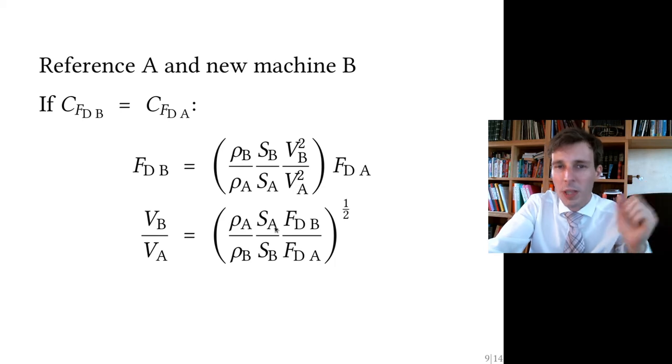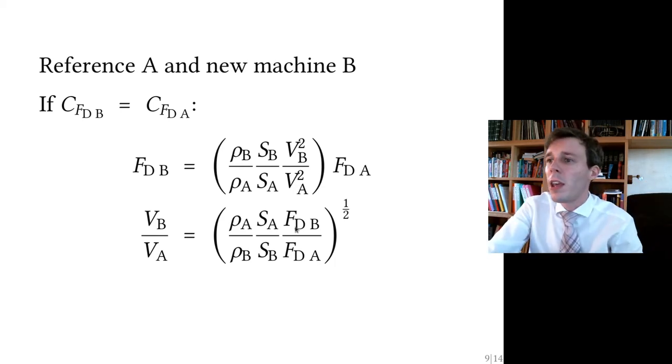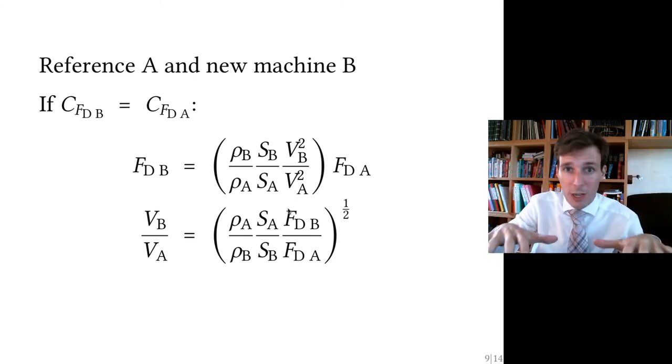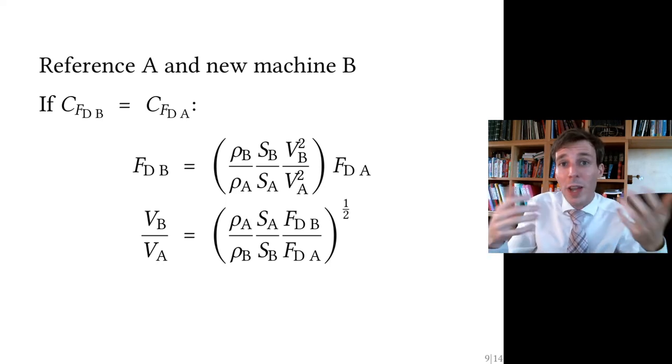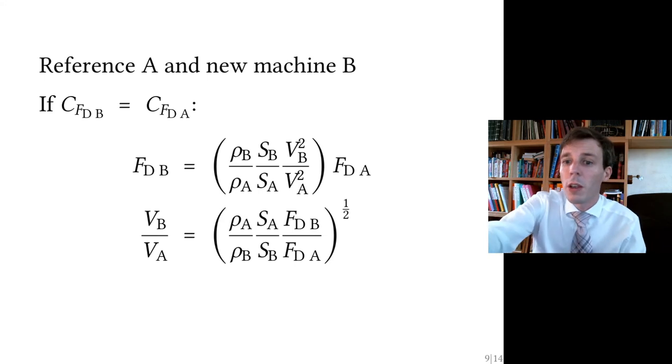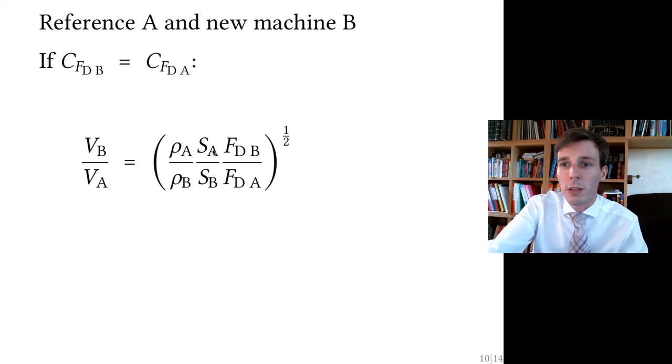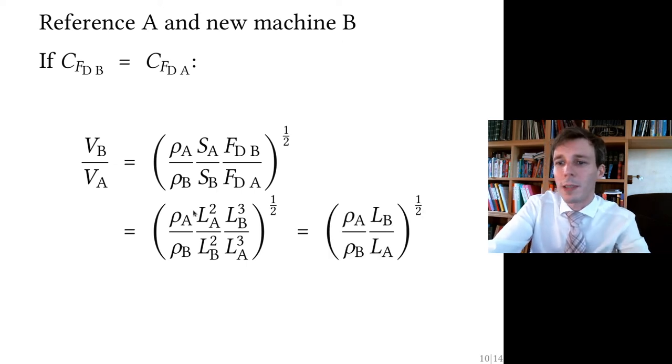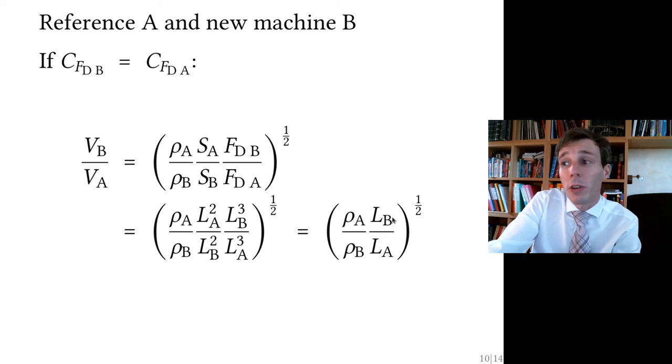And now what we try to do here is to replace first the area, S, by the square of the length, because area grows together with the square of the length. And then we're going to replace the force, which is the lift of the airplane that you need to apply, so it is equal to the weight of the airplane. This force grows together with the weight, and the weight grows together with the cube of length. So once you put the lengths into this equation here, this is the area and this is the weight, you put here the length of the airplane squared, so the ratio of the length squared, and here is again the ratio of the length cubed. And these cancel out together, so that you get the relationship that says that the velocity ratio, so the ratio of the new velocity to the old velocity, is proportional to the ratio of the new length to the old length to the power of one half.